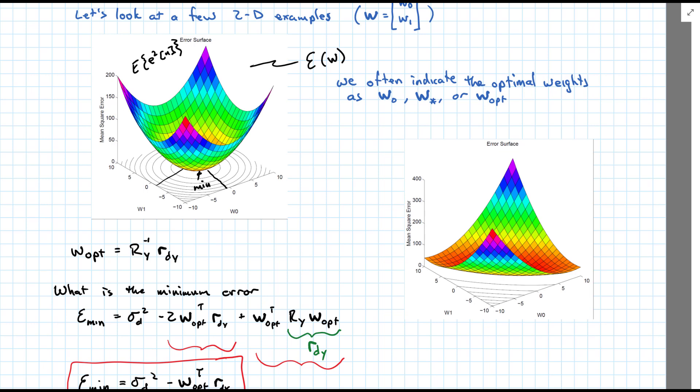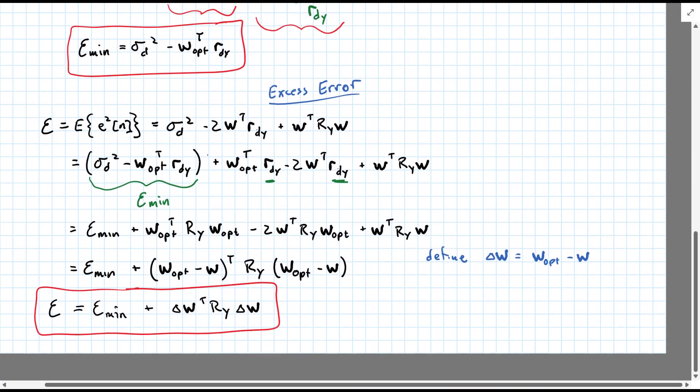we have an R_y where the eigenvalues of R_y, excuse me, differ substantially. And so the direction that we move away from the optimal matters as well. There are some directions where the error simply does not increase very much, and other directions where the error does increase. So how would you see that by looking at this equation down here?